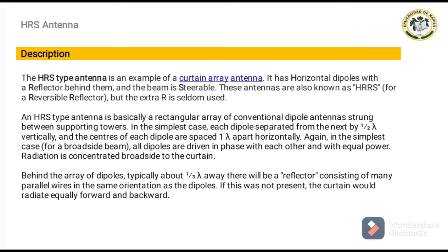The HRS type antenna is an example of a curtain array antenna. It has horizontal dipoles with a reflector behind them, and the beam is steerable. These antennas are also known as HRRS for a reversible reflector, but the extra R is seldom used. An HRS type antenna is basically a rectangular array of conventional dipole antennas strung between supporting towers. In the simplest case, each dipole is separated from the next by one-half lambda vertically, and the centers of each dipole are spaced one lambda apart horizontally. All dipoles are driven in phase with each other and with equal power for a broadside beam. Radiation is concentrated broadside to the curtain. A reflector consisting of several parallel wires in the same direction as the dipoles will be located behind the array of dipoles, usually about one-third lambda away.